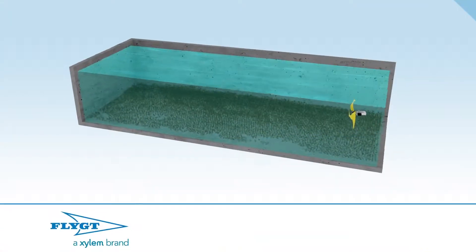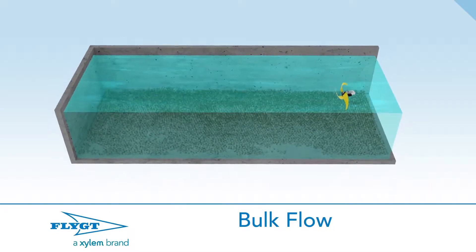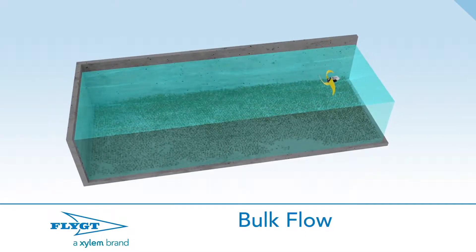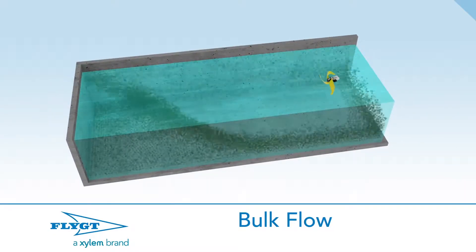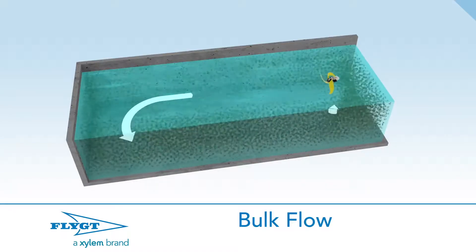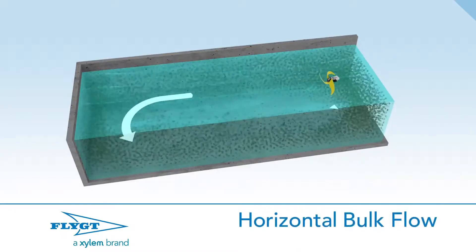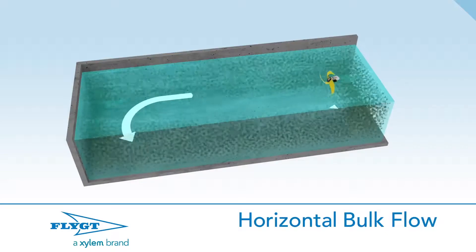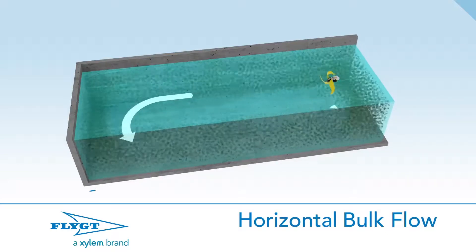Before sizing a mixer, you need to understand bulk flow. Bulk flow is the movement of the entire tank's content in a regular pattern. Creating bulk flow is the most efficient way to keep a tank mixed. Most tanks can support a variety of bulk flow patterns, but it's easiest to create bulk flow around the tank's longest axis.